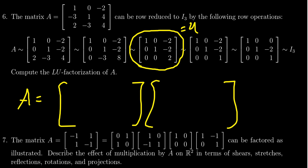And so then we can just copy down U. So there's no computation there. We just have to find U: 1, 0, negative 2, 0, 1, negative 2, 0, 0, 2.